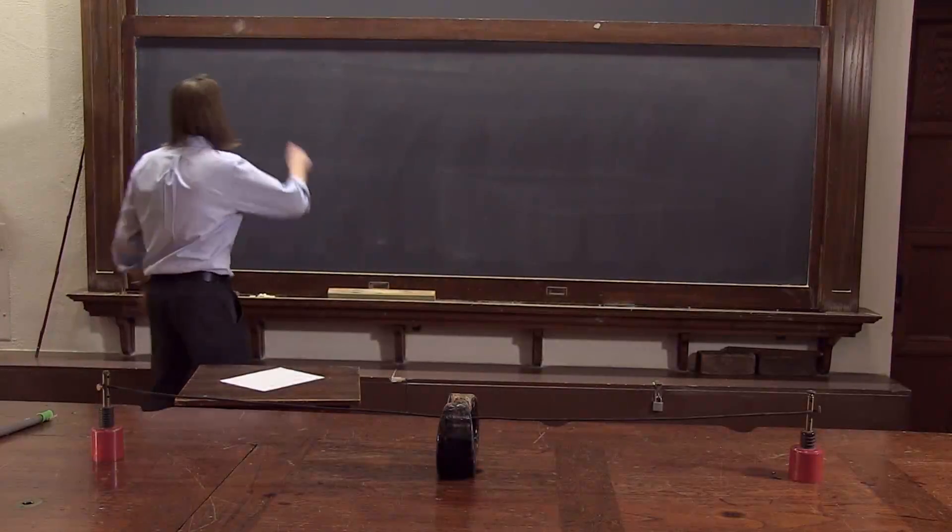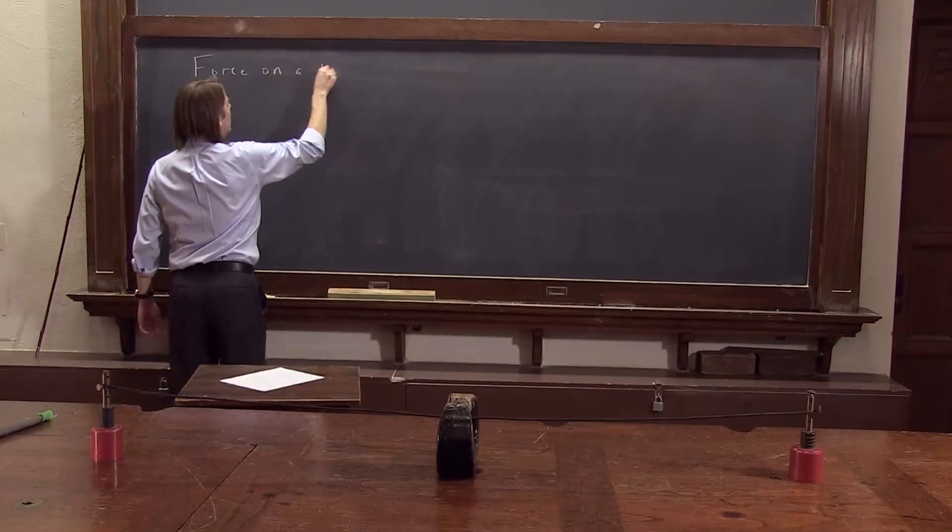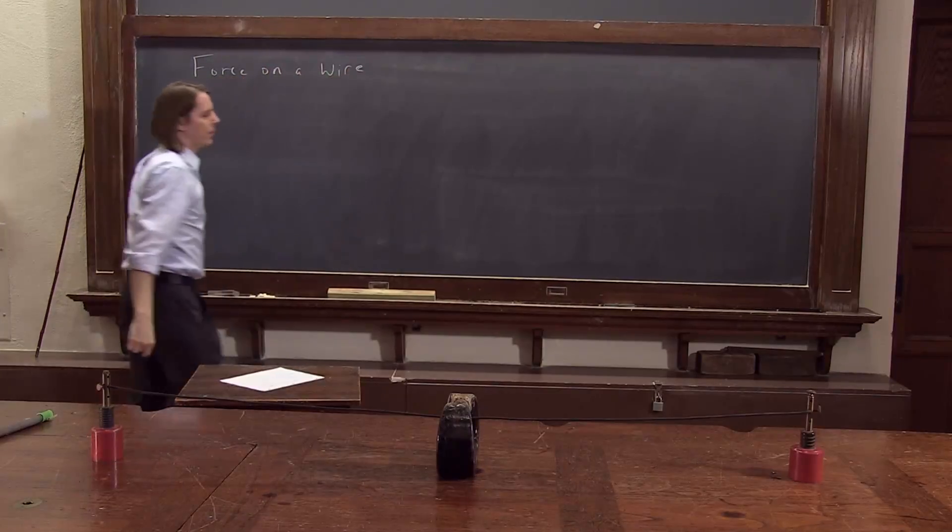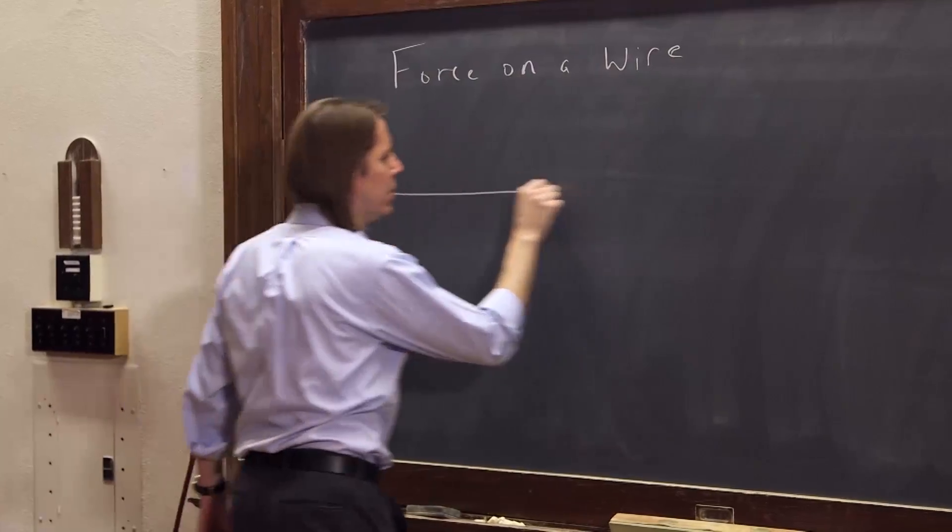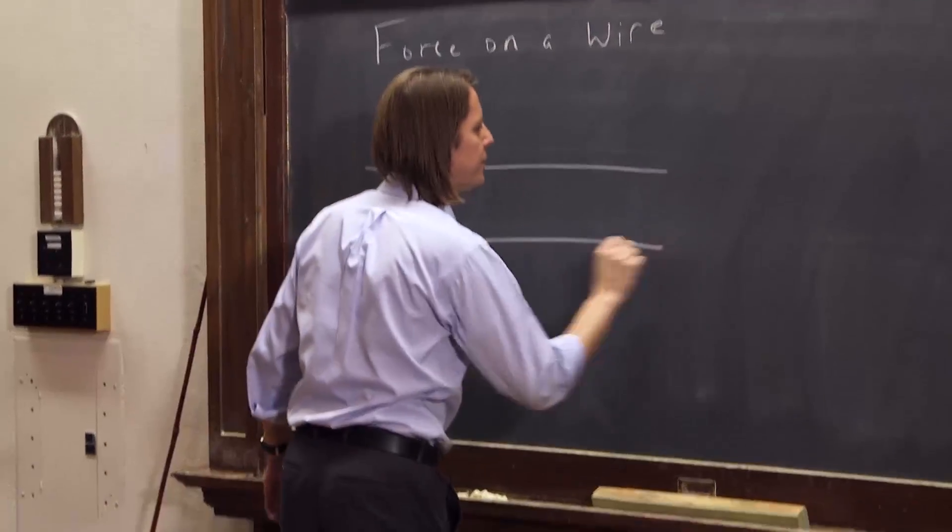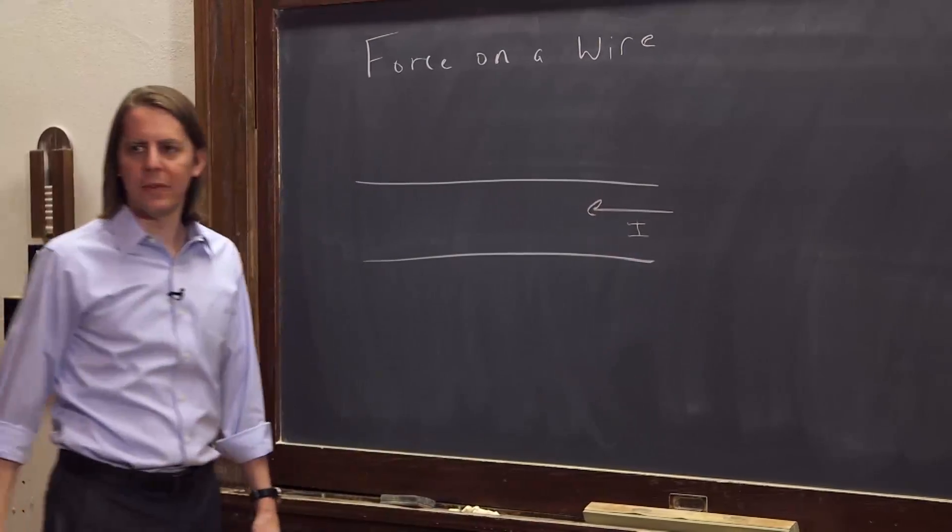So let's see if we can figure this mystery out by considering the force on a wire. Alright, so let's imagine what we just saw, a metallic conductor. And it has some current flowing through it that way.